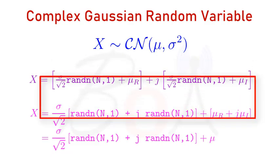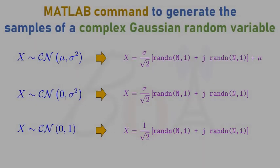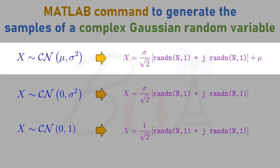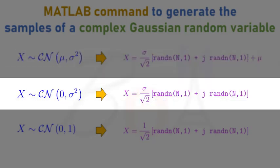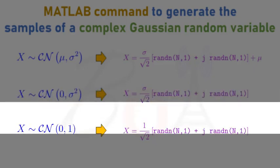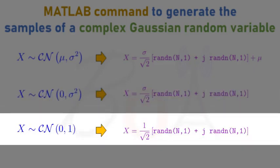After simple algebraic manipulations, we get a final command to generate the samples of a complex Gaussian random variable with mean mu and variance sigma squared. And here is the command to generate samples of a zero-mean complex Gaussian random variable with variance sigma squared. Finally, the samples of a complex Gaussian random variable with mean 0 and variance 1 can be generated by using this command.